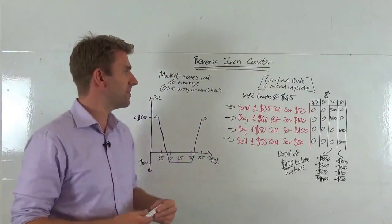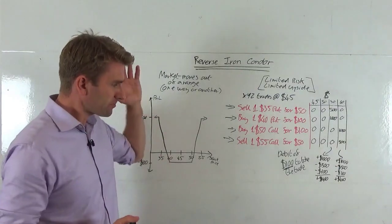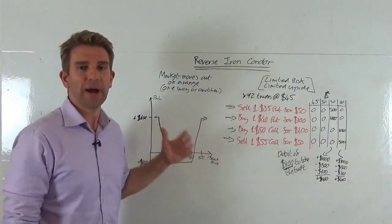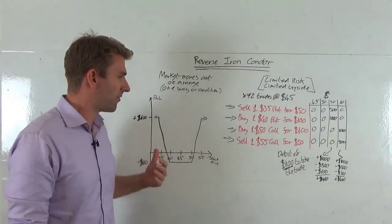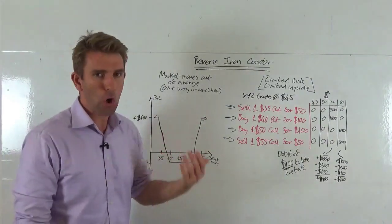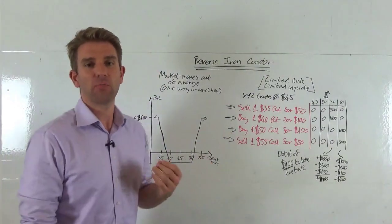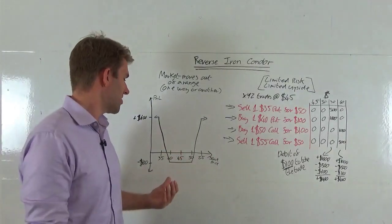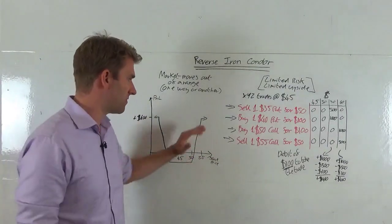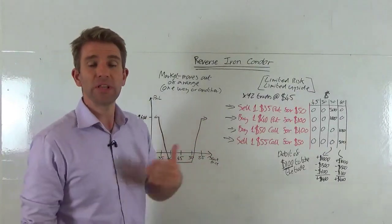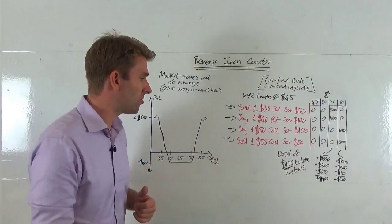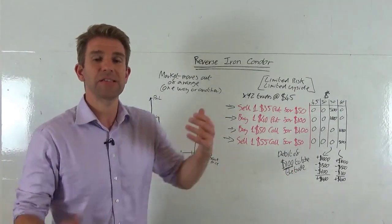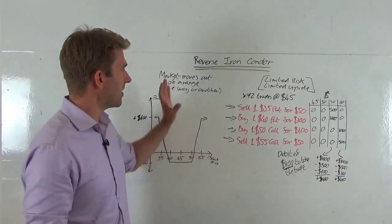This kind of strategy has a low probability of success, but the risk-reward ratio is pretty decent. In this example it's one-to-four — when it pays off we make $400, and when it doesn't we lose $100. That's the decision you have to make.